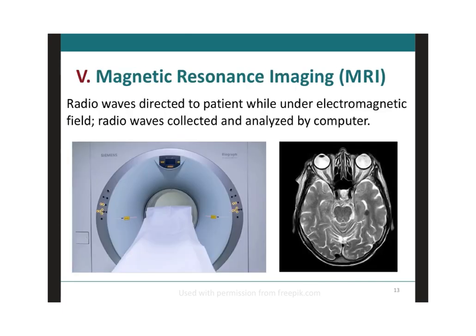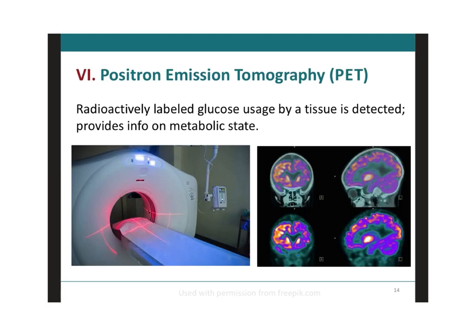Magnetic resonance imaging, or MRI, is a procedure that uses radio waves together with a very powerful magnet to produce an image that is sent to a computer. Lastly, the positron emission tomography — or PET scan — is a procedure in which a small amount of radioactive glucose, basically sugar, is injected into a vein. A scanner then makes detailed computerized pictures of areas inside the body where the glucose is taken up. Because cancer cells often take up more glucose than normal cells, the pictures can be used to find cancer cells in the body.